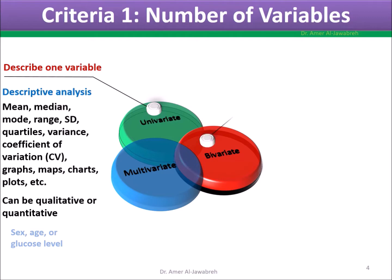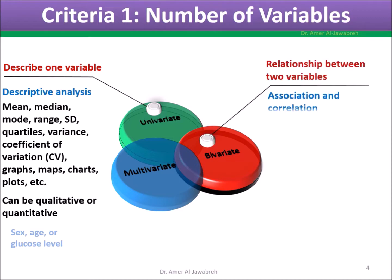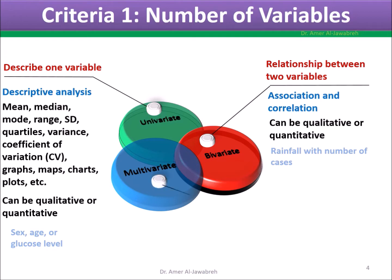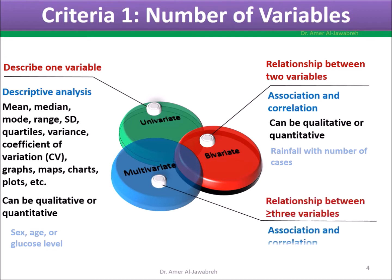Criteria 1: variables are either univariate, describing one variable; bivariate, describing the relationship between two variables; or multivariate, describing the relationship between three or more variables.